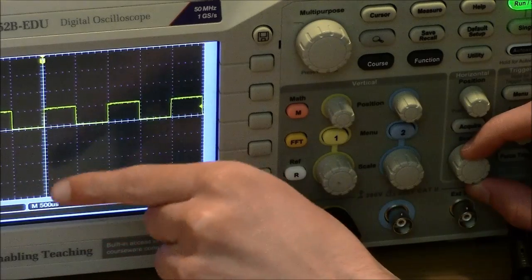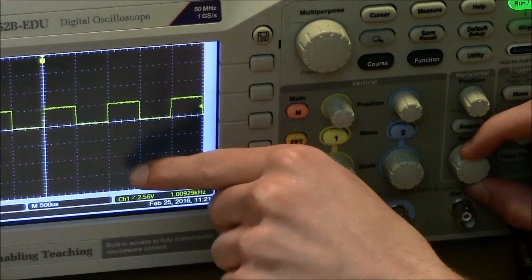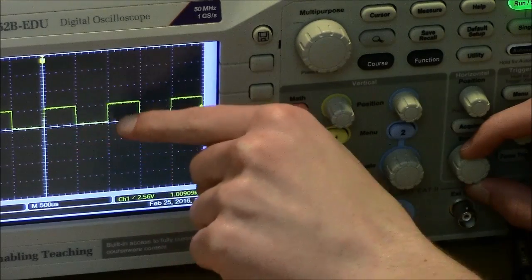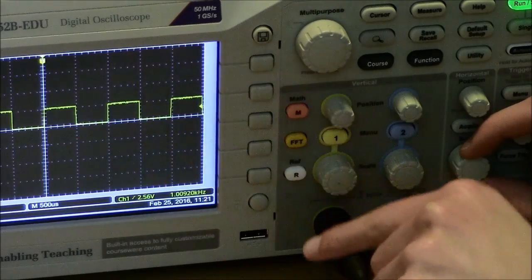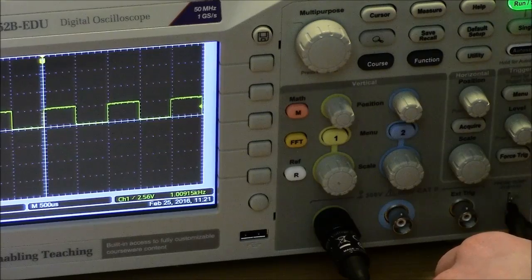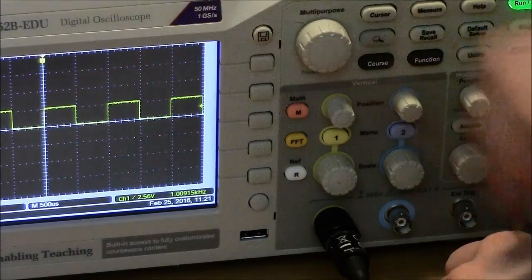So at here, each one of these boxes is 500 microseconds long and so the pulse, the wavelength of the pulse here is one millisecond. 500 microseconds high, 500 microseconds low and the entire wavelength is one millisecond.